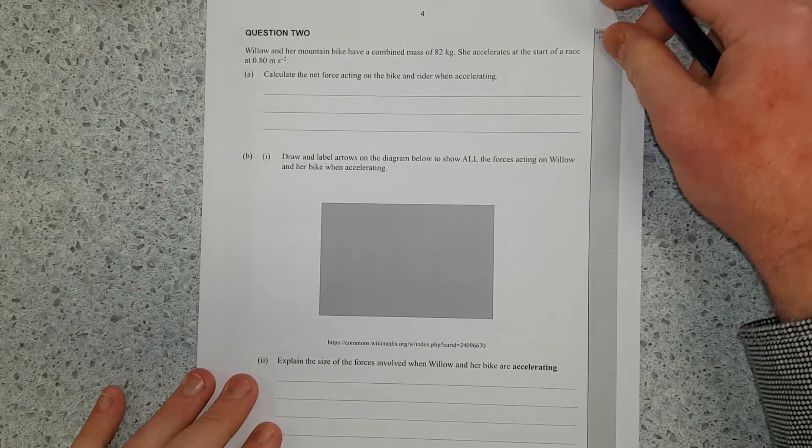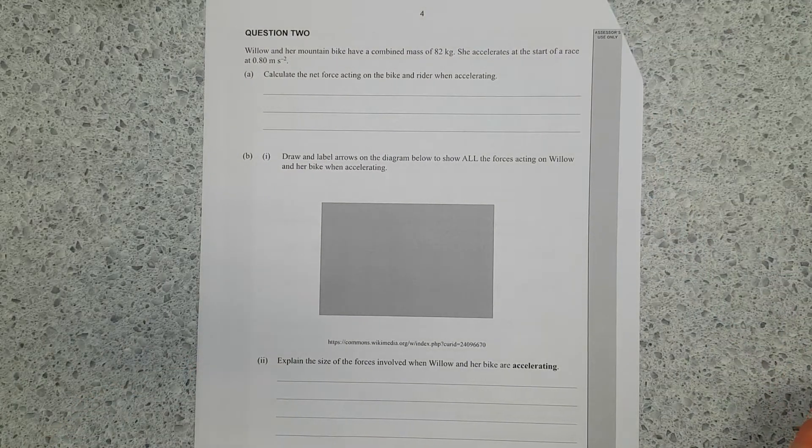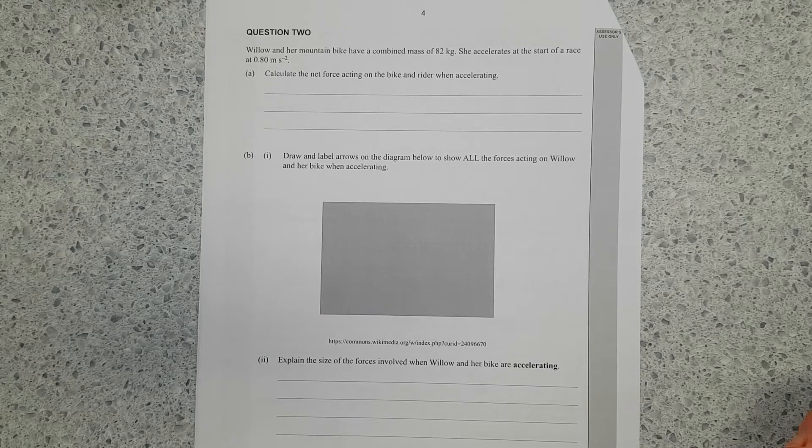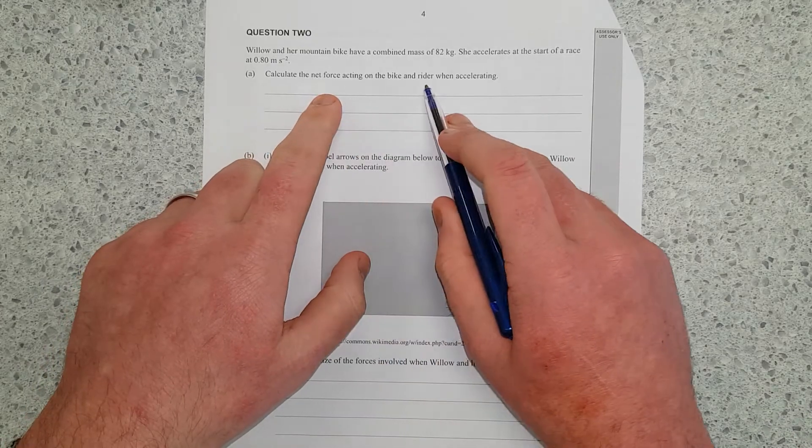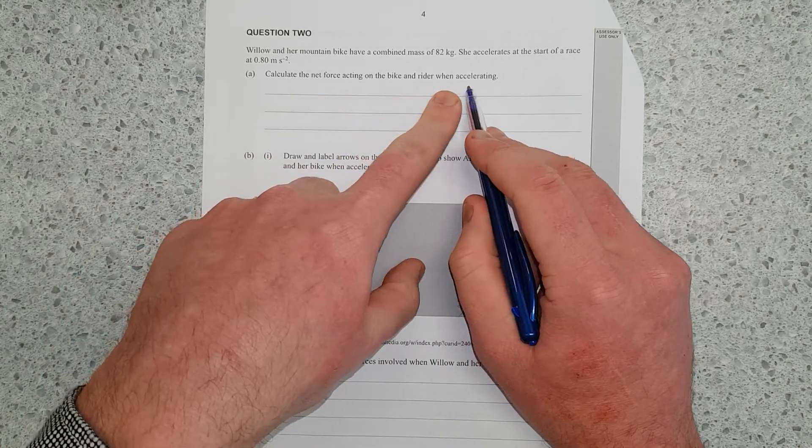Willow and a mountain bike have combined mass of 82 kilograms. She accelerates at the start of the race at 0.8 meters per second squared. Calculate the net force acting on the bike and rider when accelerating.